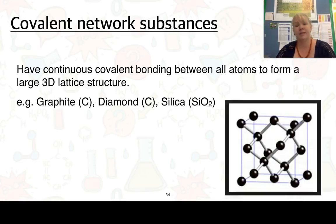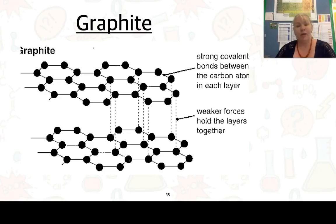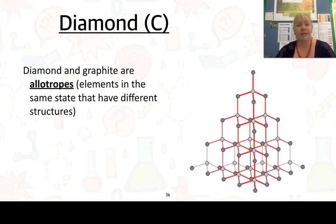Covalent network substances have a continuous covalent bonding between all atoms and then they form the 3D lattice structure. We've got some examples here: graphite, diamond and silica. Graphite has strong covalent bonds between the carbon atoms in each layer and weaker forces holding the layers together. Here we have an example of diamond. Diamond and graphite are allotropes, so elements in the same state that have different structures. Here we can see the bonding occurring as well.